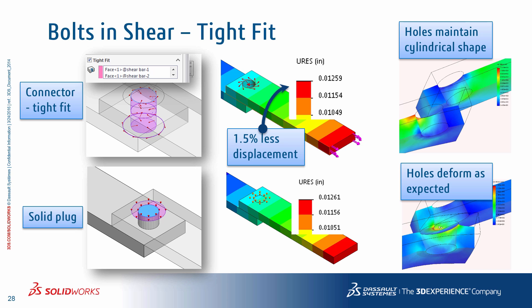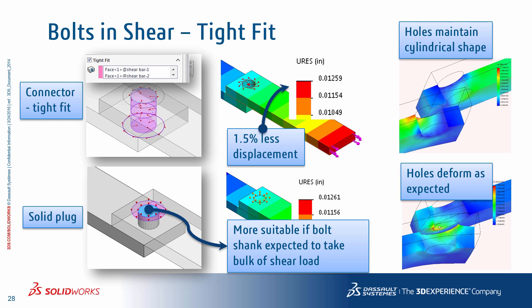An interesting difference is when you look at the actual deformation of the parts. The exaggerated displacement using the tight fit bolted connection shows that the holes retain their cylindrical shape because the tight fit connector makes the holes very rigid — in reality that's not the case. When you put the bolt geometry itself into the simulation, the hole deformation is more realistic because elasticity and movement have been introduced. So if you expect the shank to take most of the shear and that physical scenario is critical for design decisions, you may want to use a solid bolt plug instead of the bolt connector.